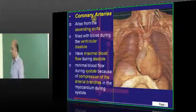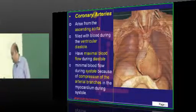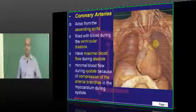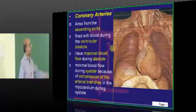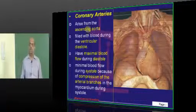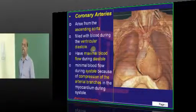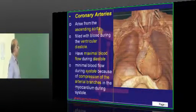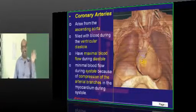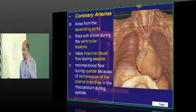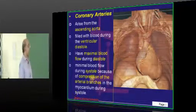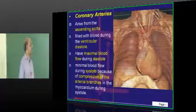Coronary arteries is one of the very important topics in anatomy. They arise from the ascending aorta. Whenever the ventricle undergoes diastole, that is the time they get filled with blood and they have the maximal blood flow. Coronary flow is maximum whenever the heart is in diastole.